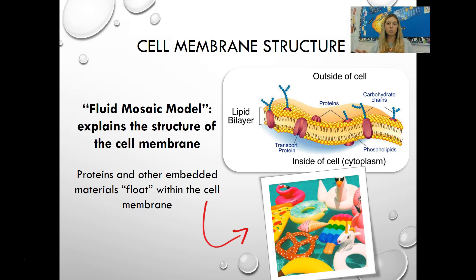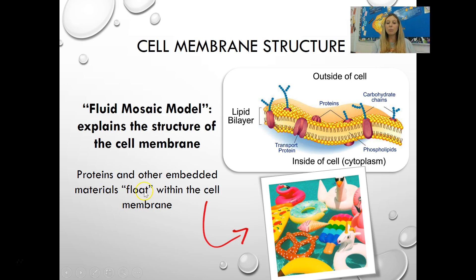The cell membrane has all these structures embedded within it and is really flexible, constantly bending and flexing. All those embedded things float with the flexibility of the membrane. This is explained by what we call the fluid mosaic model, which explains that proteins and other materials float within the cell membrane. Think of a pool full of floats — when waves come, all those floaties move with the waves. That's exactly what the embedded proteins and materials are doing as the cell membrane flexes and bends.